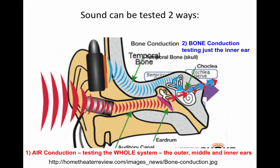Sounds can be tested two ways. First, with air conduction, which tests the whole system. Air conduction sends sounds through the outer ear, the middle ear, and the inner ear to the auditory nerve — it's like when you wear headphones.